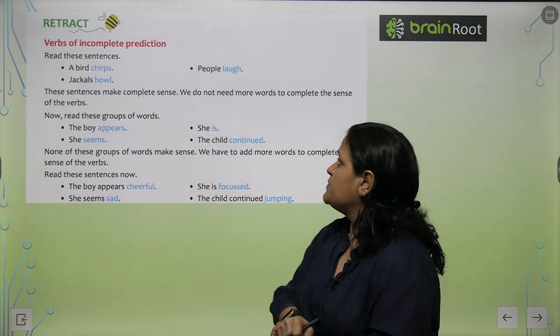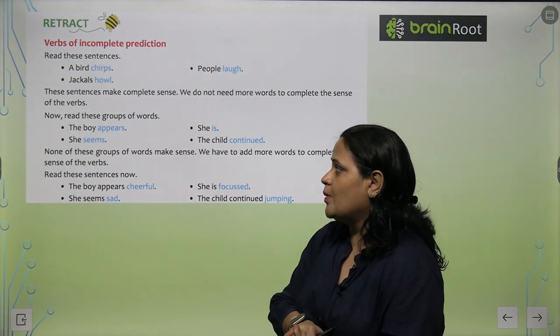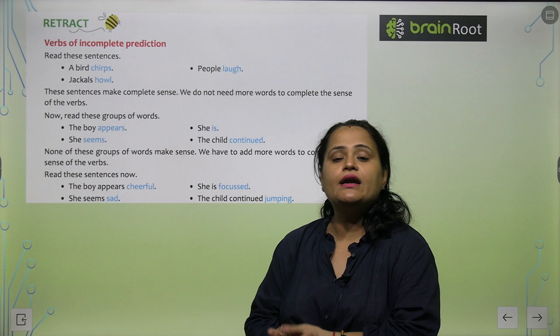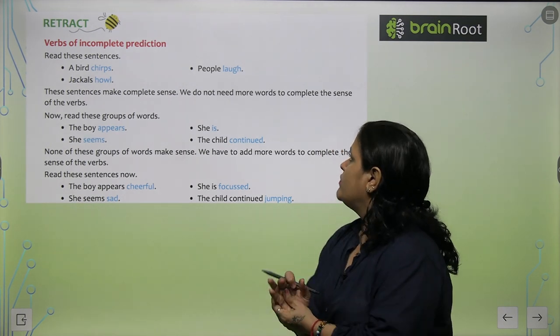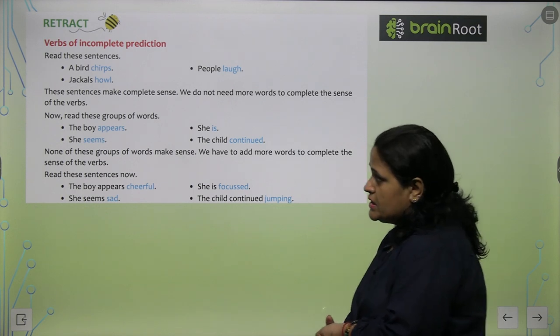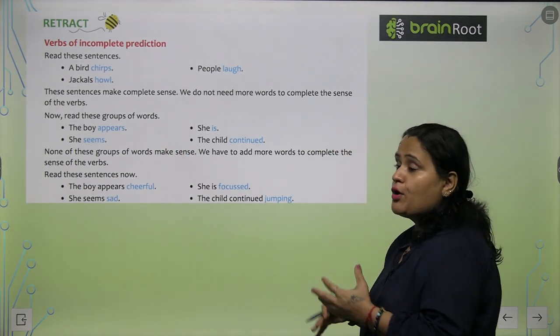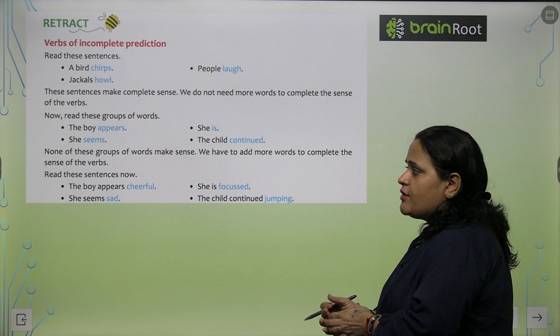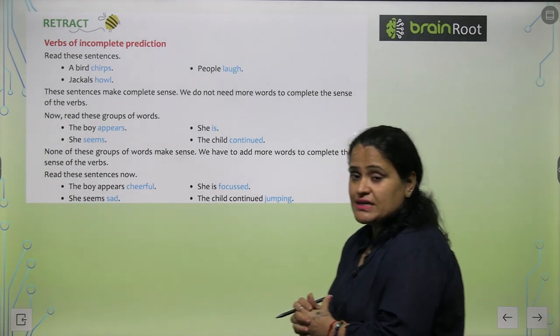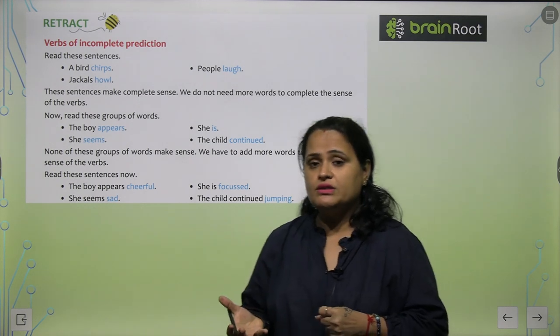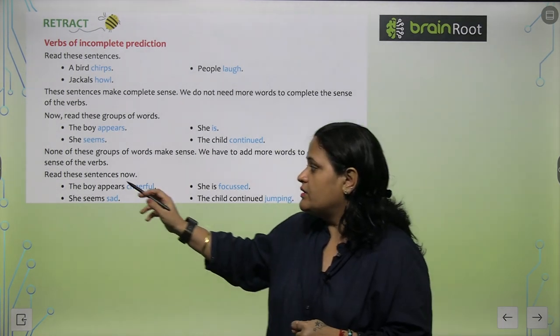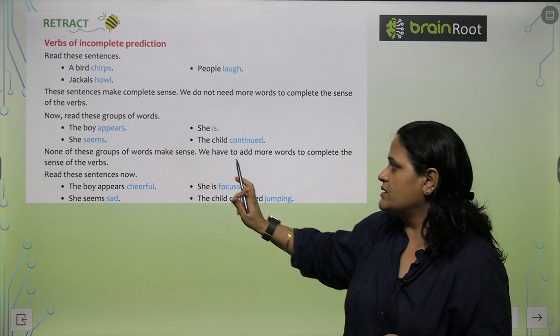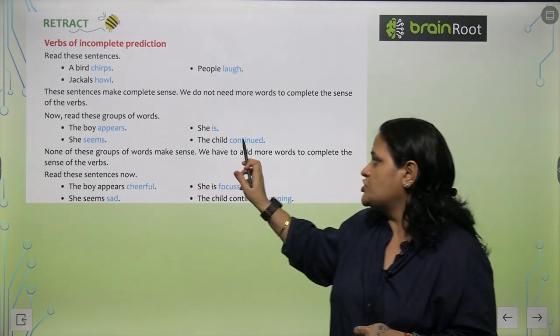So now verbs of incomplete prediction. What is this? Read these sentences: A bird chirps, people laugh, jackal howl. These sentences make complete sense. Iske aage hamein kuch bhi add karne ki zarurat nahi hai. We don't need more words to complete the sense of the verbs. Now read these group of verbs: The boy appears, she seems, she is, the child continued. None of these groups of verbs make sense. Koi bhi sense nahi bana raha. We have to add more words to understand the meaning.